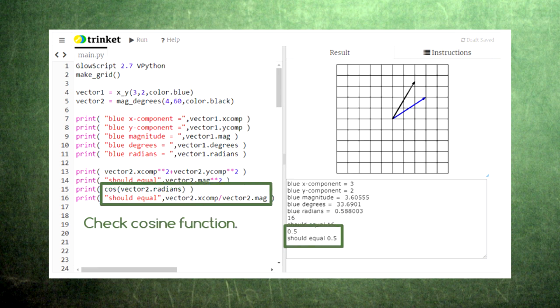We can also take the cosine of vector2's angle in radians and see that we do, in fact, get the same number as its x component divided by its magnitude. Note that even though we created vector2 using an angle measured in degrees, Python's sine, cosine, and tangent functions take angles in units of radians.